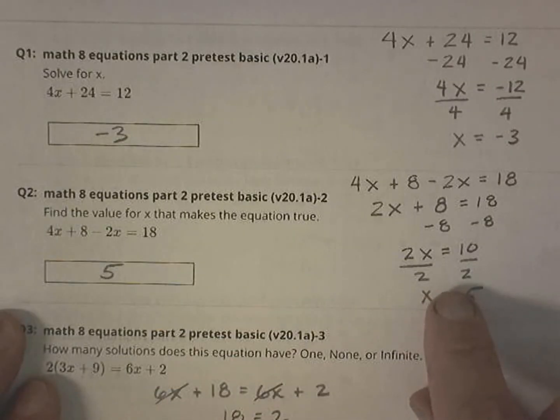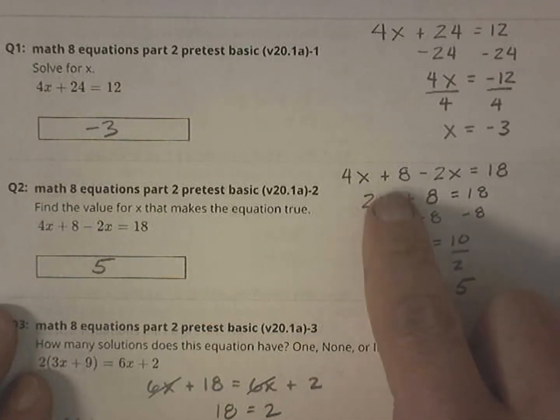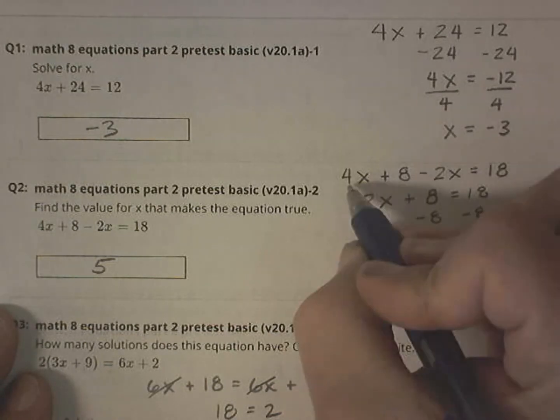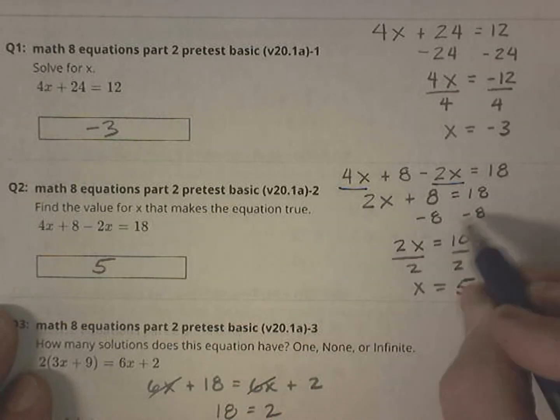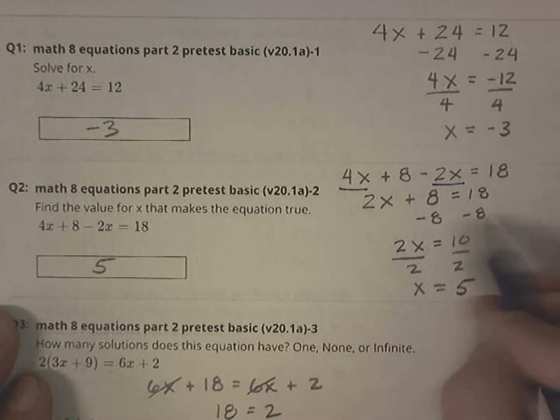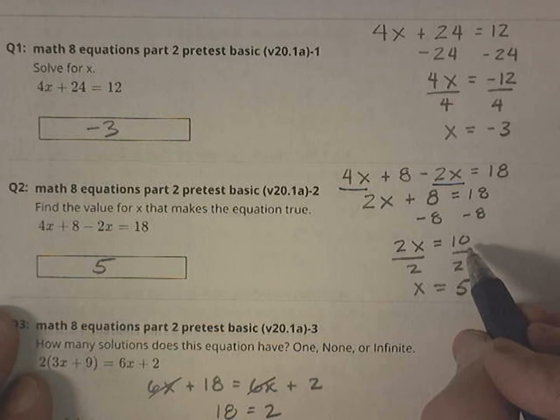This one, I have 4x plus 8 minus 2x. I started by combining these two terms. So I'm going to combine those two terms into 2x plus 8 equals 18. Subtracting 8 from both sides, so 2x equals 10. And dividing both sides by 2 gives me x equals 5.